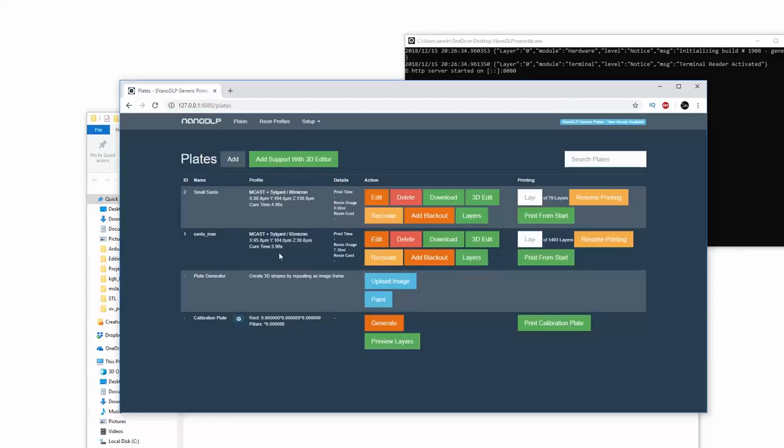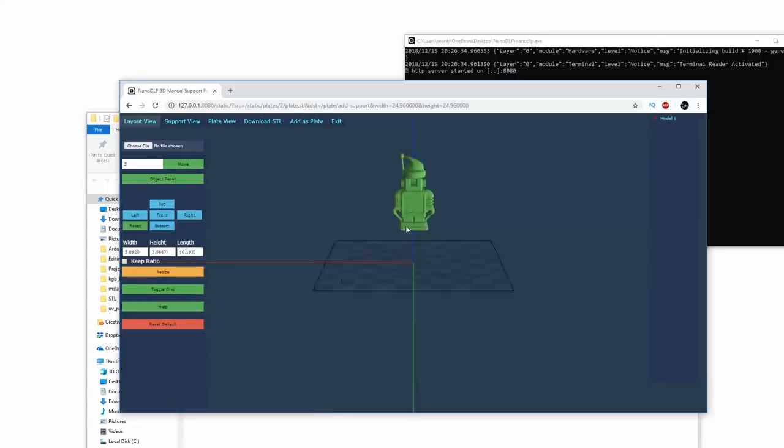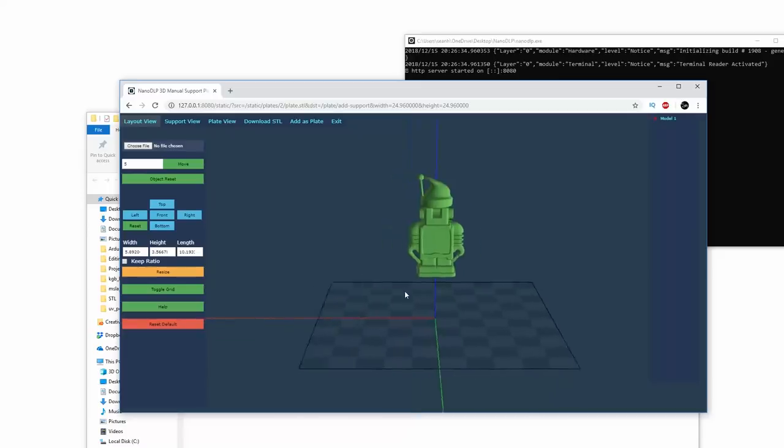I've already imported an STL file, and we can have a look at that. It's this little Santa from Thingiverse, I'll put a link in here. And it's going to slice this Santa into image layers.